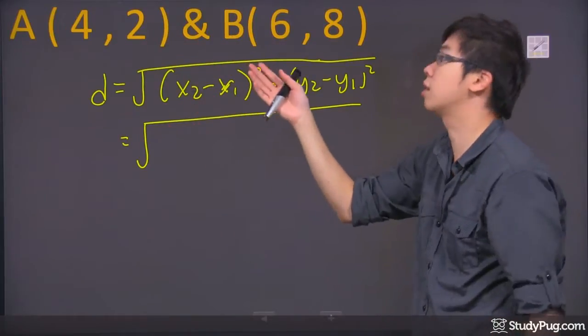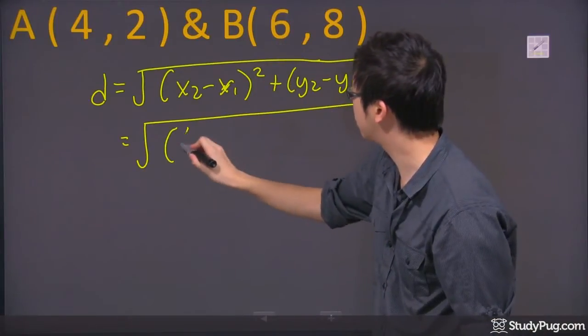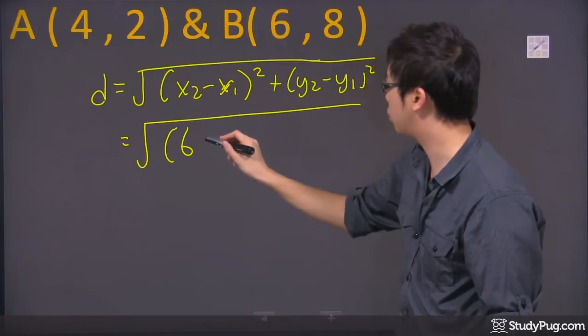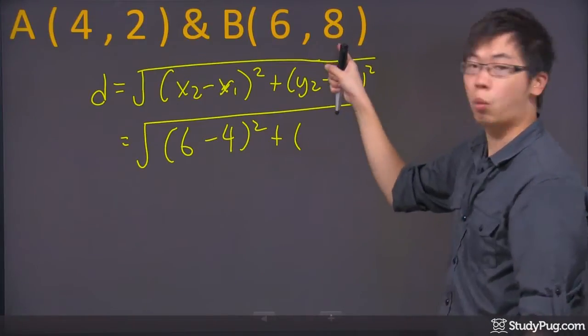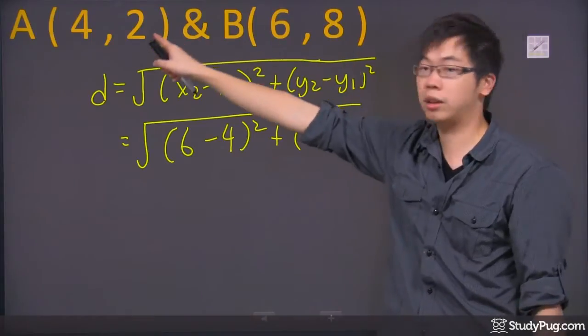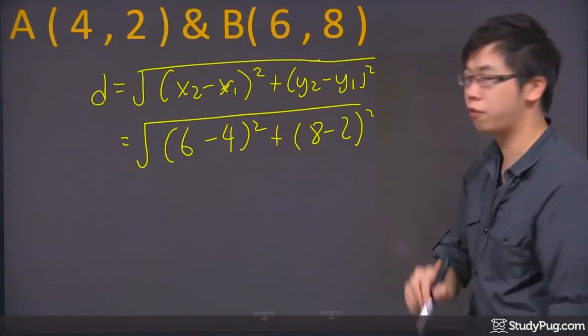There's your x2. I'm going to put 6, subtract x1, which is 4, and square that. Plus y2, which is 8, subtract 2. So that's 8 minus 2. Don't forget to square that.